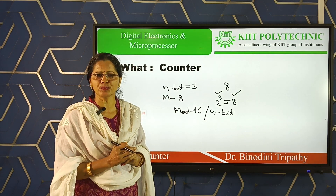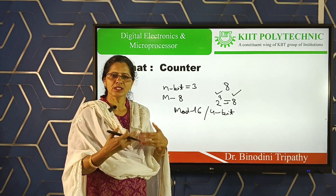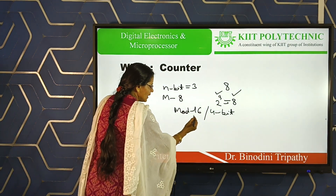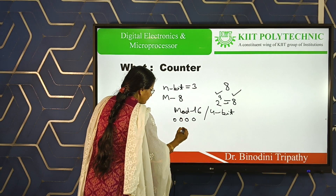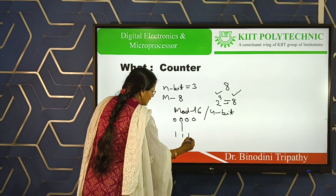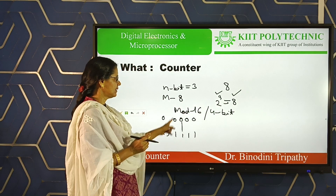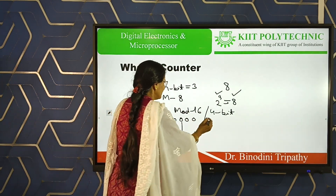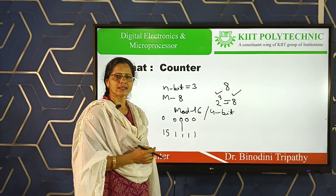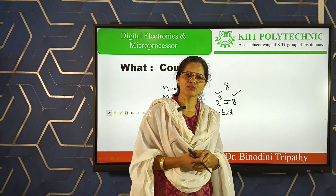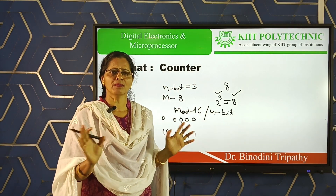It can count from 0 to 15 in decimal form. In binary form, the 16 counting sequences start from 0000 to 1111, or decimally 0 to 15. In each counting sequence, you have 4 bits. Similarly, you can take mod 4, mod 5, mod 6, or any mod value you can take.